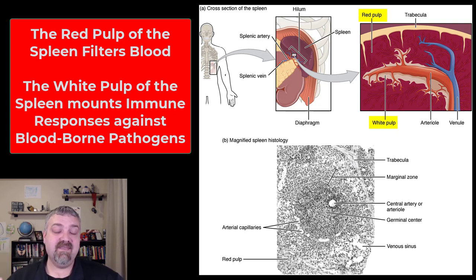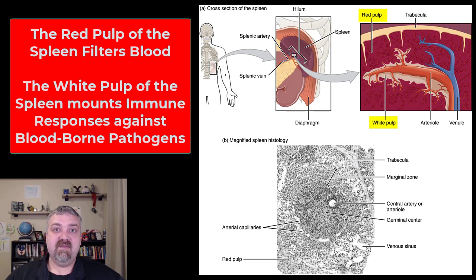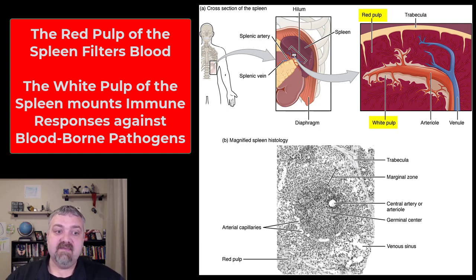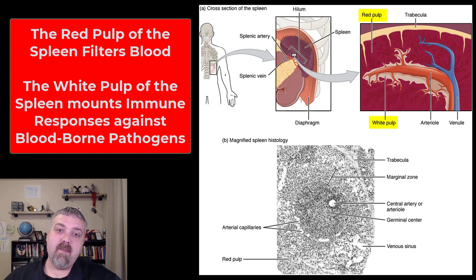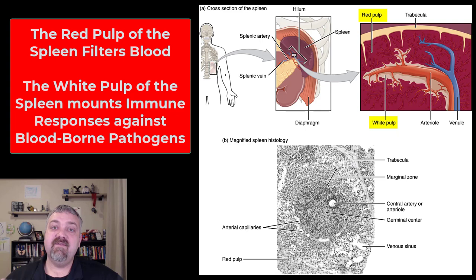So what they're going to be doing — think about the white pulp of your spleen as a huge lymph node. It has the same lymphoid follicles as a lymph node does, and it's going to be filtering things, looking at things, then mounting immune responses from there. So the red pulp and the white pulp of the spleen are really both involved in immunity, but primarily when you think of the red pulp, think of the filtering of blood.